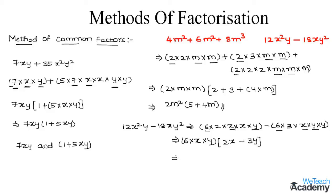That implies the solution is 6xy × (2x − 3y). So the factors of the given expression are 6xy and (2x − 3y). This was a basic introduction to the method of common factors. Hope you understood the concept. For more videos on factorization, visit our website VTH Academy. Thanks for watching, have a nice day.